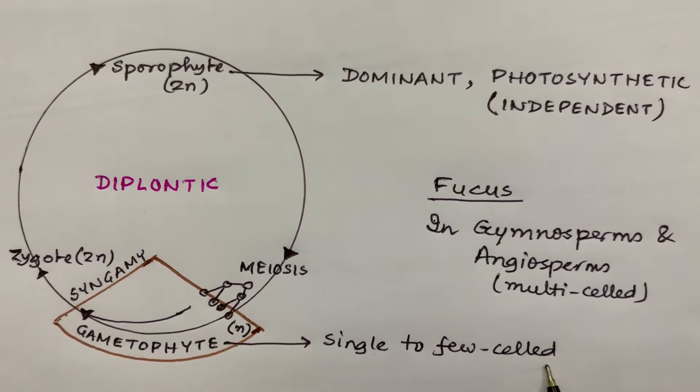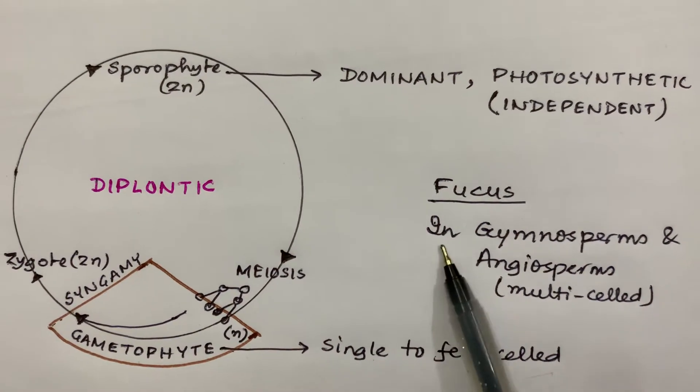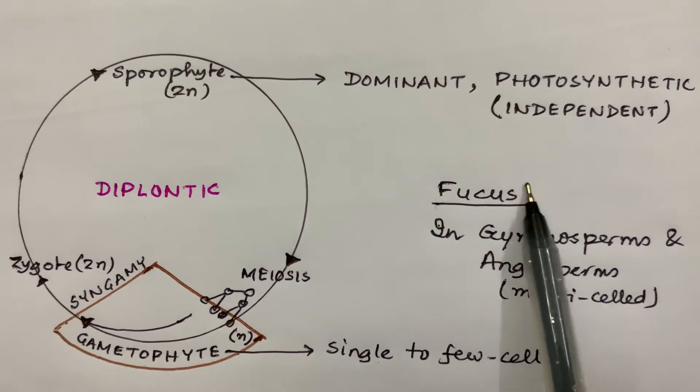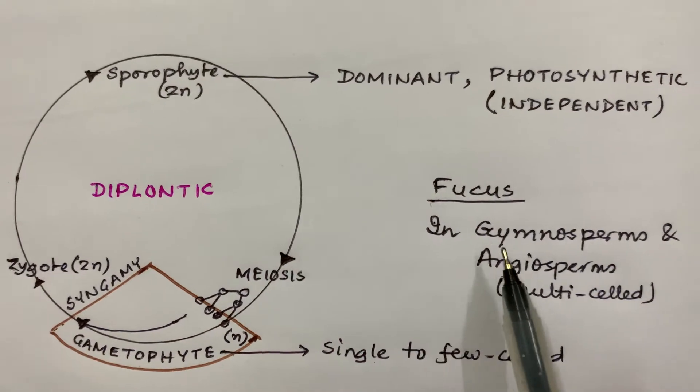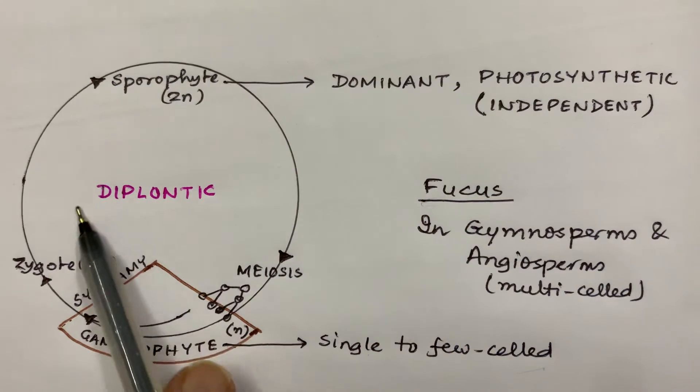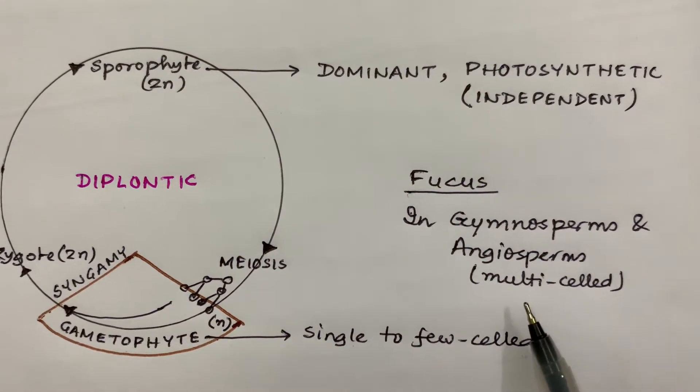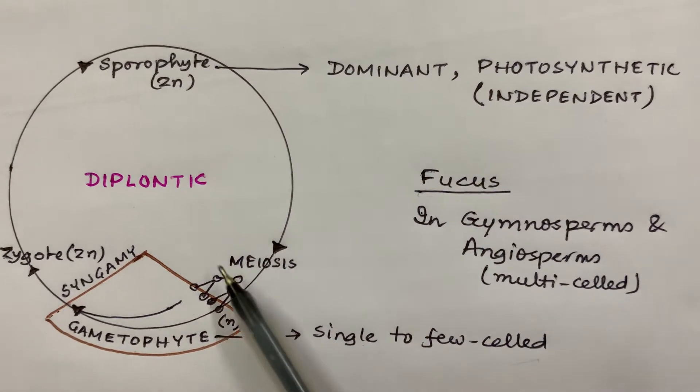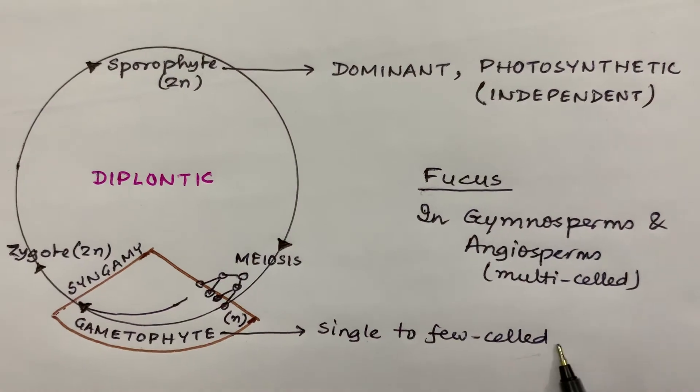The gametophyte is single to few-celled. This occurs in Fucus, which is a brown algae, but in gymnosperms and angiosperms also the same life cycle occurs—the diplontic life cycle. The only difference is in Fucus it is few-celled; in case of angiosperms it is multi-celled.